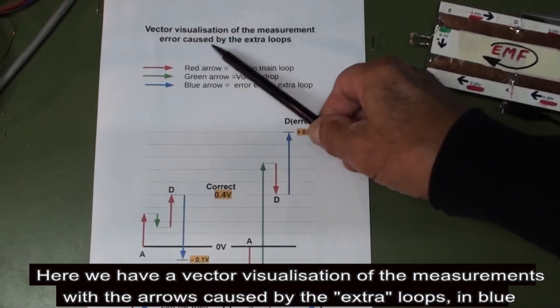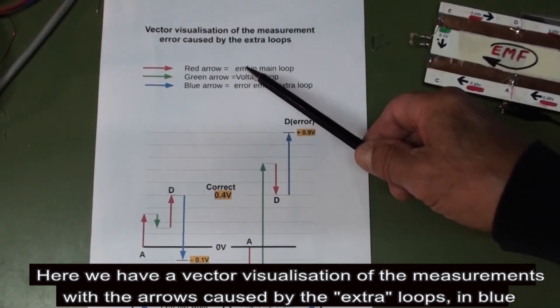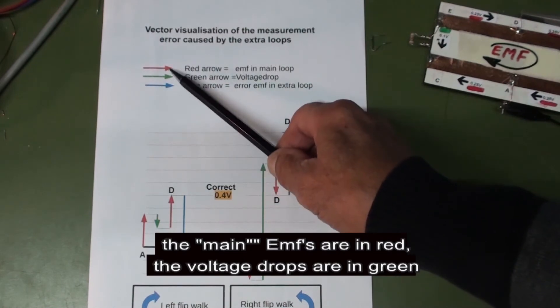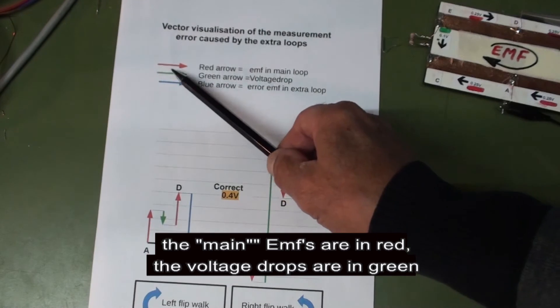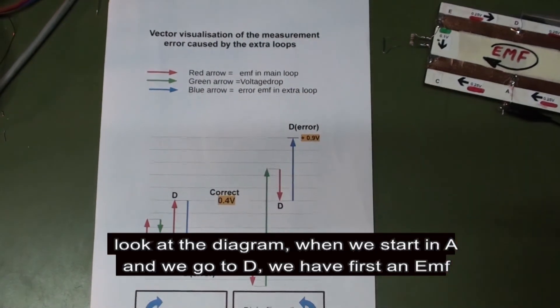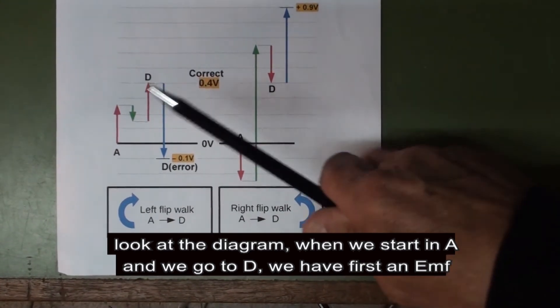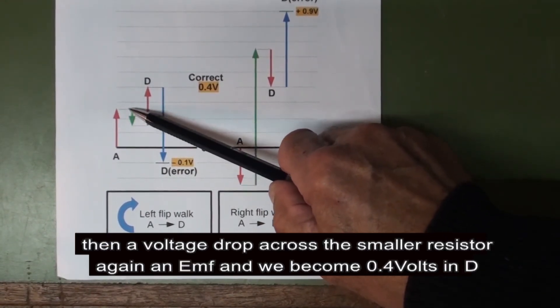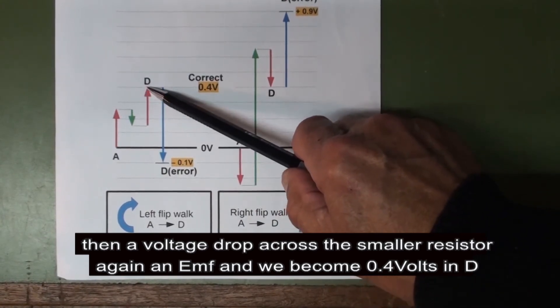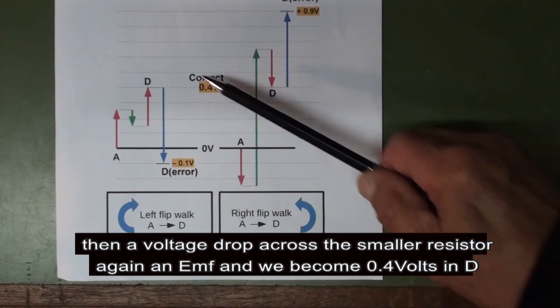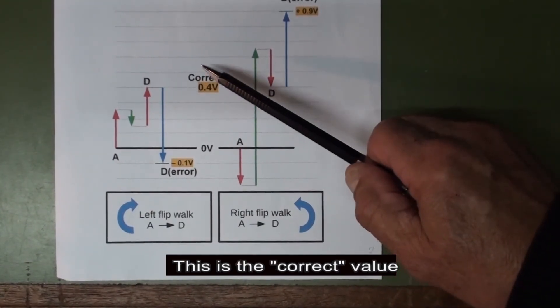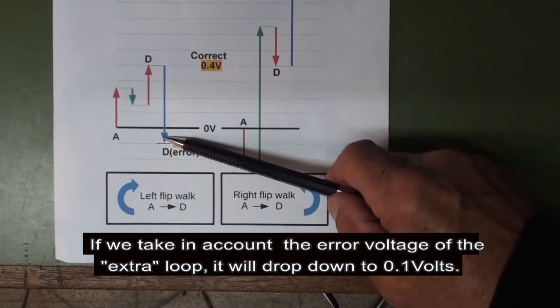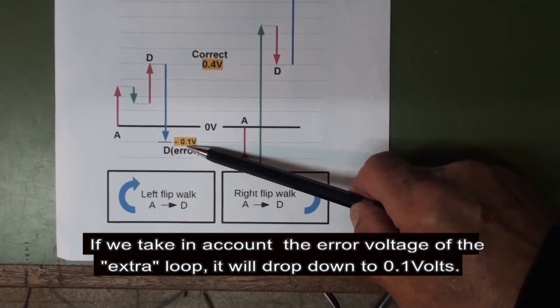Here we have a vector visualization of the measurement with the arrows caused by the extra loops. They are in blue. The main EMF is in red. The voltage drops are in green. Look at the diagram. When we start in E and we go to D, we have first an EMF, then a voltage drop across the small resistor, again an EMF, and we come to 0.4 volts in D. This is the correct value. If you take into account the error voltage of the extra loop, it will drop down to minus 0.1 volt. This is an error.